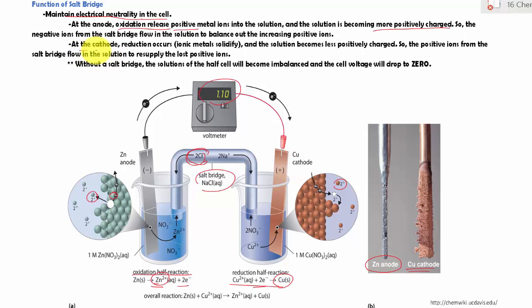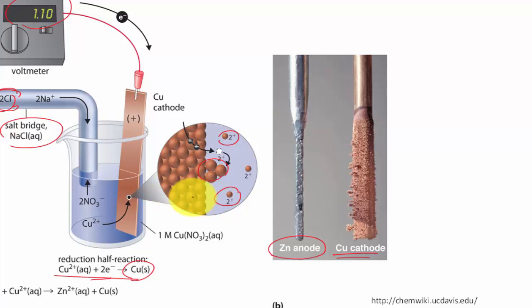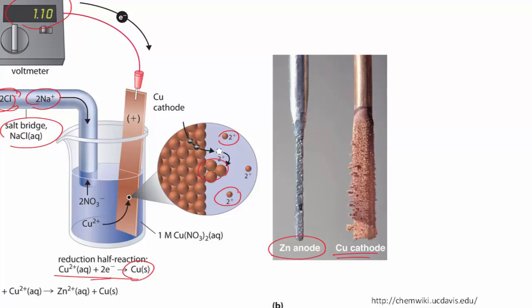On the other hand, in the cathode half cells, reduction occurs. In the reduction process, the positive ions in the solution gain the electron and are solidified. But the solution has now lost the positive charge, because it has lost the positive ions. So the solution becomes less positive. In order to resupply the positive ions in the solution, the positive ions in the salt bridge will flow into the solution, replenishing the positive ions that are lost through the reduction process. That is how the salt bridge helps to maintain the half cells to be electrically neutral.